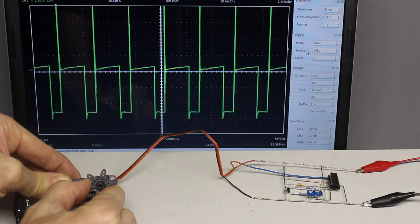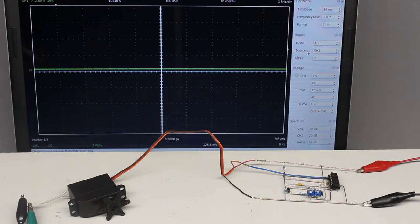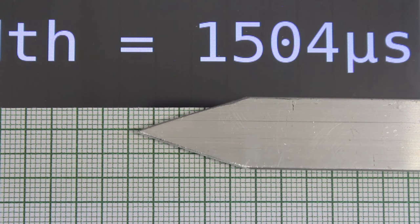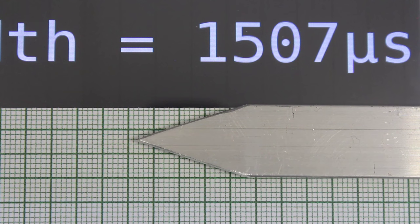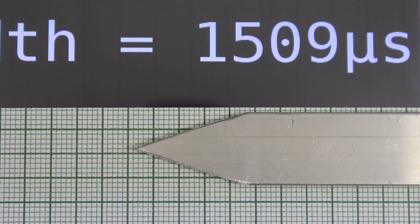To avoid oscillations around the setpoint, only a fraction of the maximum power is forwarded by pulse width modulation to the motor whenever the error between actual value and setpoint is small. With increasing error, the motor is powered with a higher duty cycle.